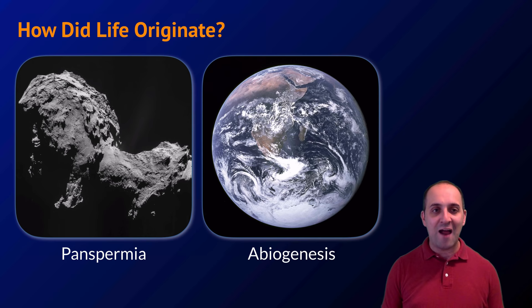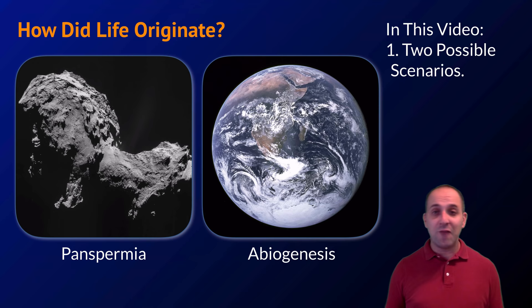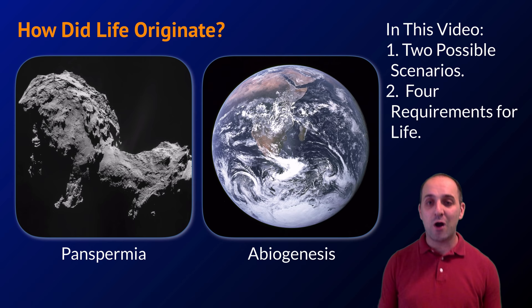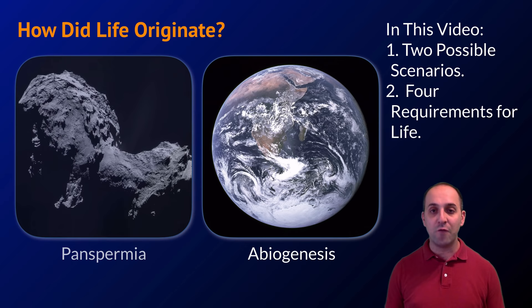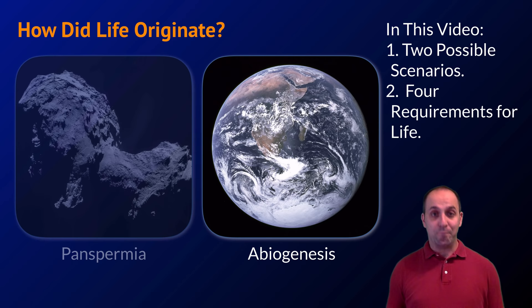Panspermia suggests that life originated elsewhere and arrived here on perhaps an asteroid or comet. Abiogenesis is the notion that life originated on Earth from non-living components present on early Earth. In this video we're going to investigate abiogenesis and the four requirements needed for life to evolve, along with some supporting evidence.